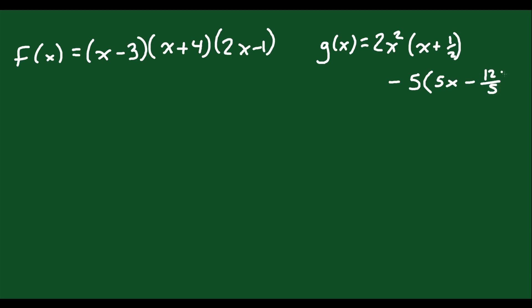Let's do another question. Let's say we have the function f(x) equals x minus 3 times x plus 4 times 2x minus 1. And then you're also told that g(x) is equal to 2x squared times x plus 1 half minus 5 times 5x minus 12 over 5. So I had to write in two lines just so it fit here.